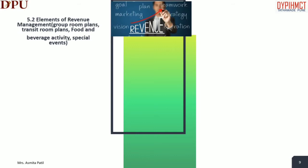The key elements include: group room sales, transit room sales, other revenue management, local and area-wide activities, and special events. One of the most important things to understand about revenue management is that the practice changes from property to property. It may also change from season to season within a property due to sources of business, competition and other issues. However, there are certain elements important to developing a basic revenue management strategy.